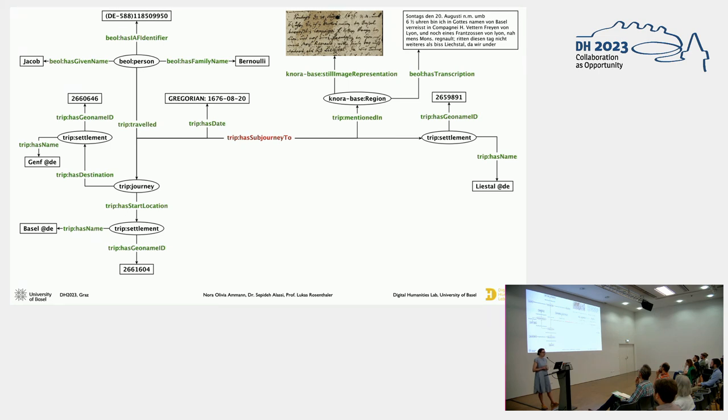This journey has a sub-journey, which was to Liestal. This is close to Basel. And this statement has been done with the RDF star triple. So in land travel, each sub-journey contains a stay, which is added through the predicate has stay to the has sub-journey to, and the location of the stay, the accommodation can be specified with the trip stayed at.